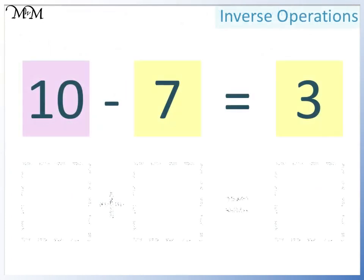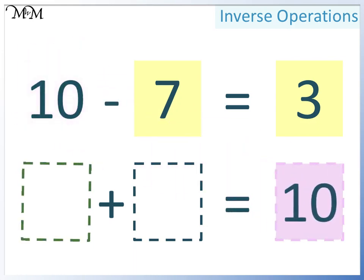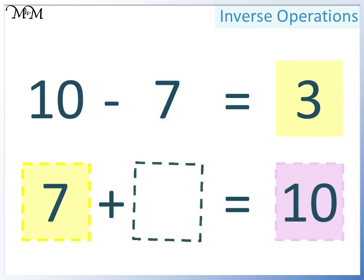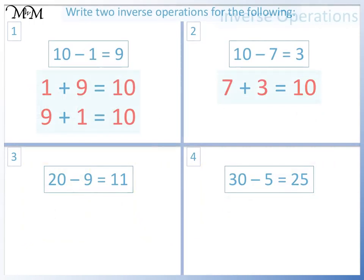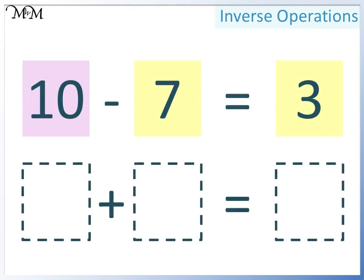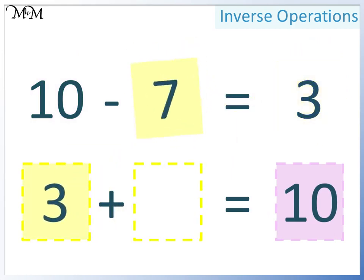10 take away 7 equals 3. Let's look at the first way: the largest number goes here. Either of the two smaller numbers can go here — this time we will write 7, and in this space we will write 3. 7 plus 3 equals 10. The second way is by again writing the largest number at the end. This time we will write 3 here, and finally we will write 7 here. 3 plus 7 equals 10.